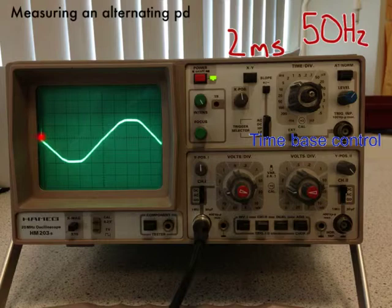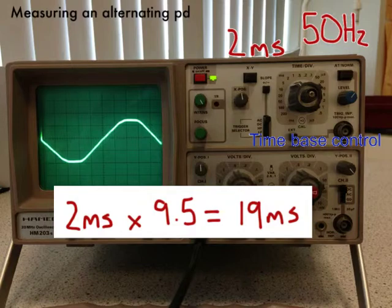So, if I take a point on a wave, and I count my way along to the next similar point on the next wave there, so it's gone through one complete oscillation back to its starting point again, I'll actually count there that I've gone by about 9.5 squares. Like I said, each square is worth 2 milliseconds.